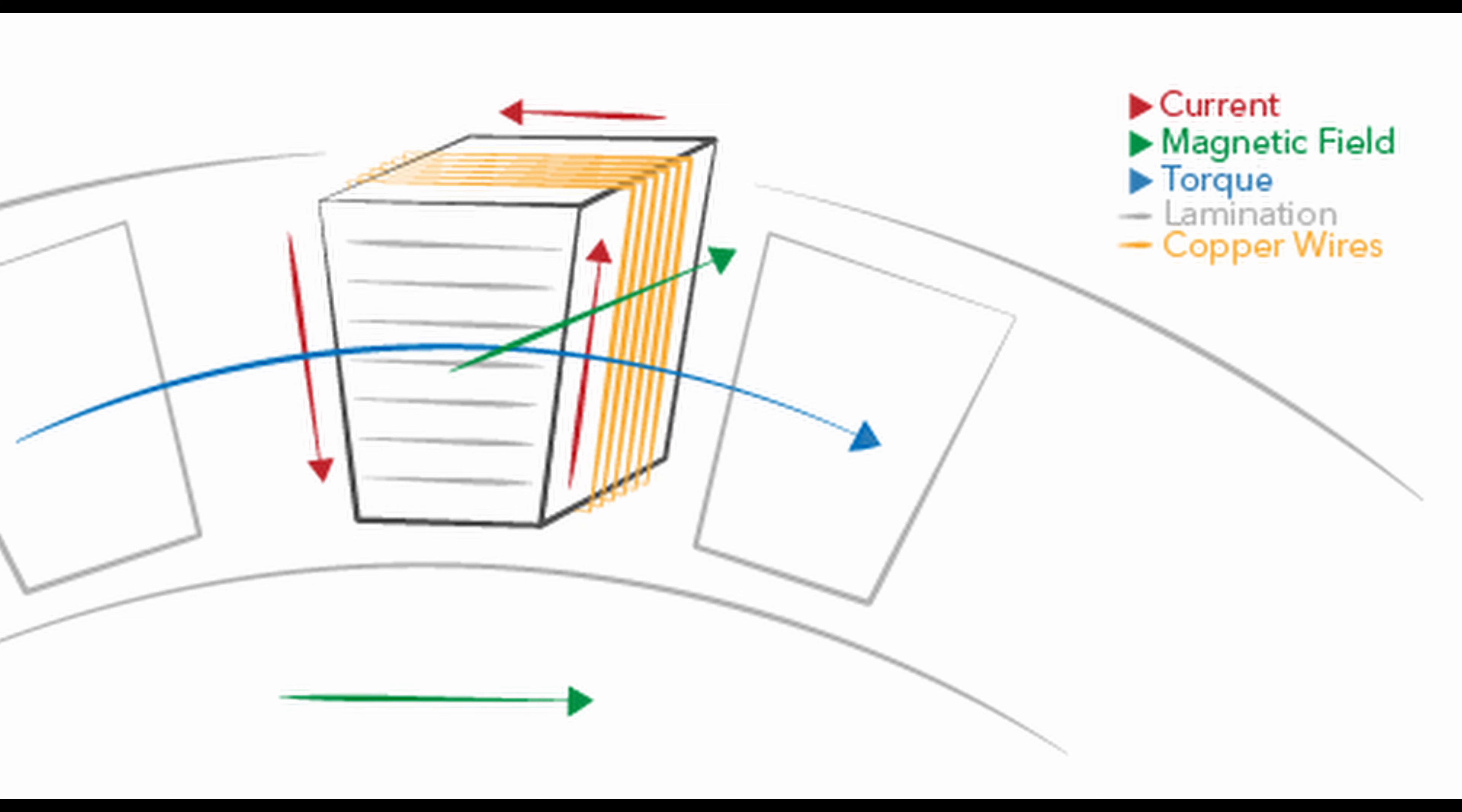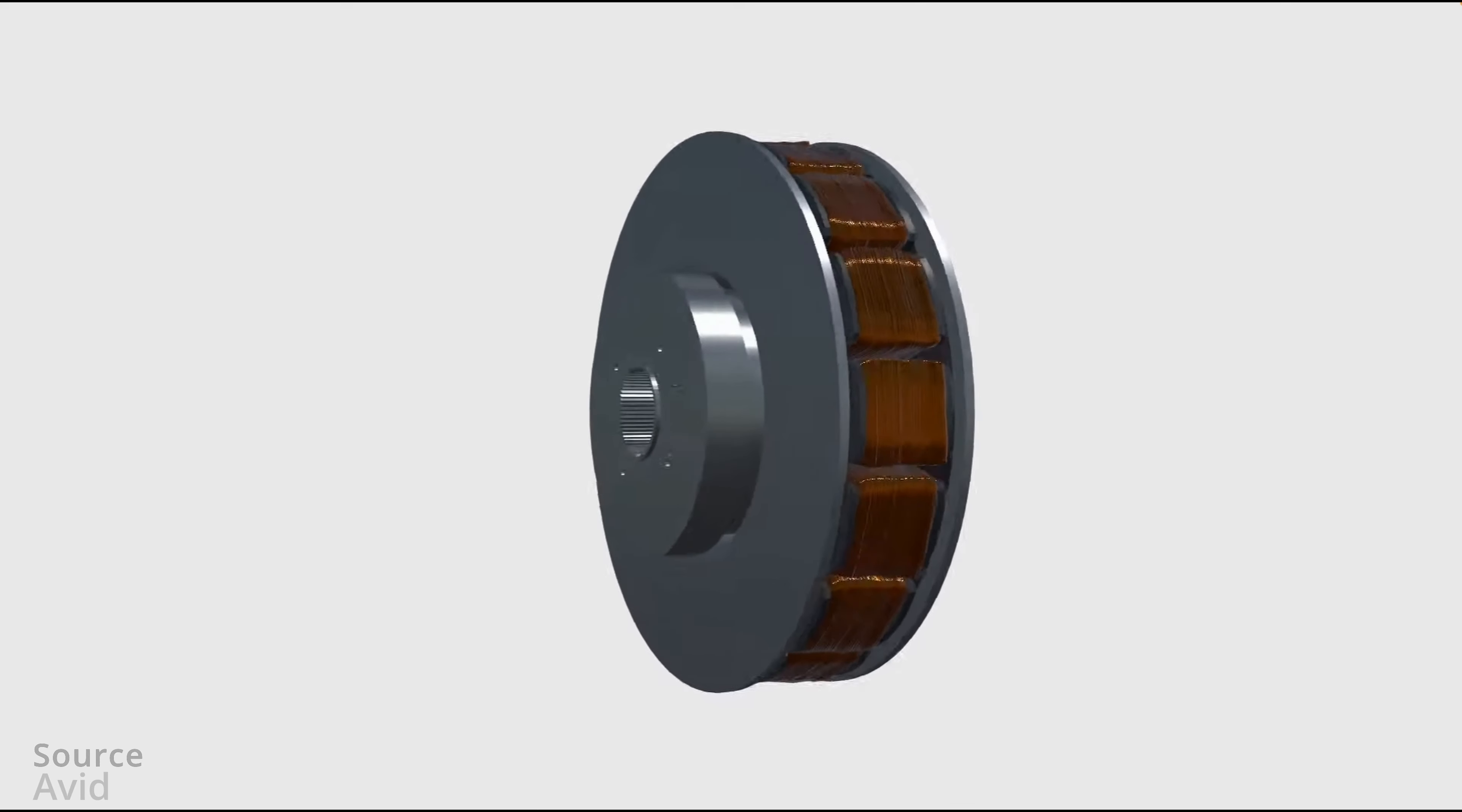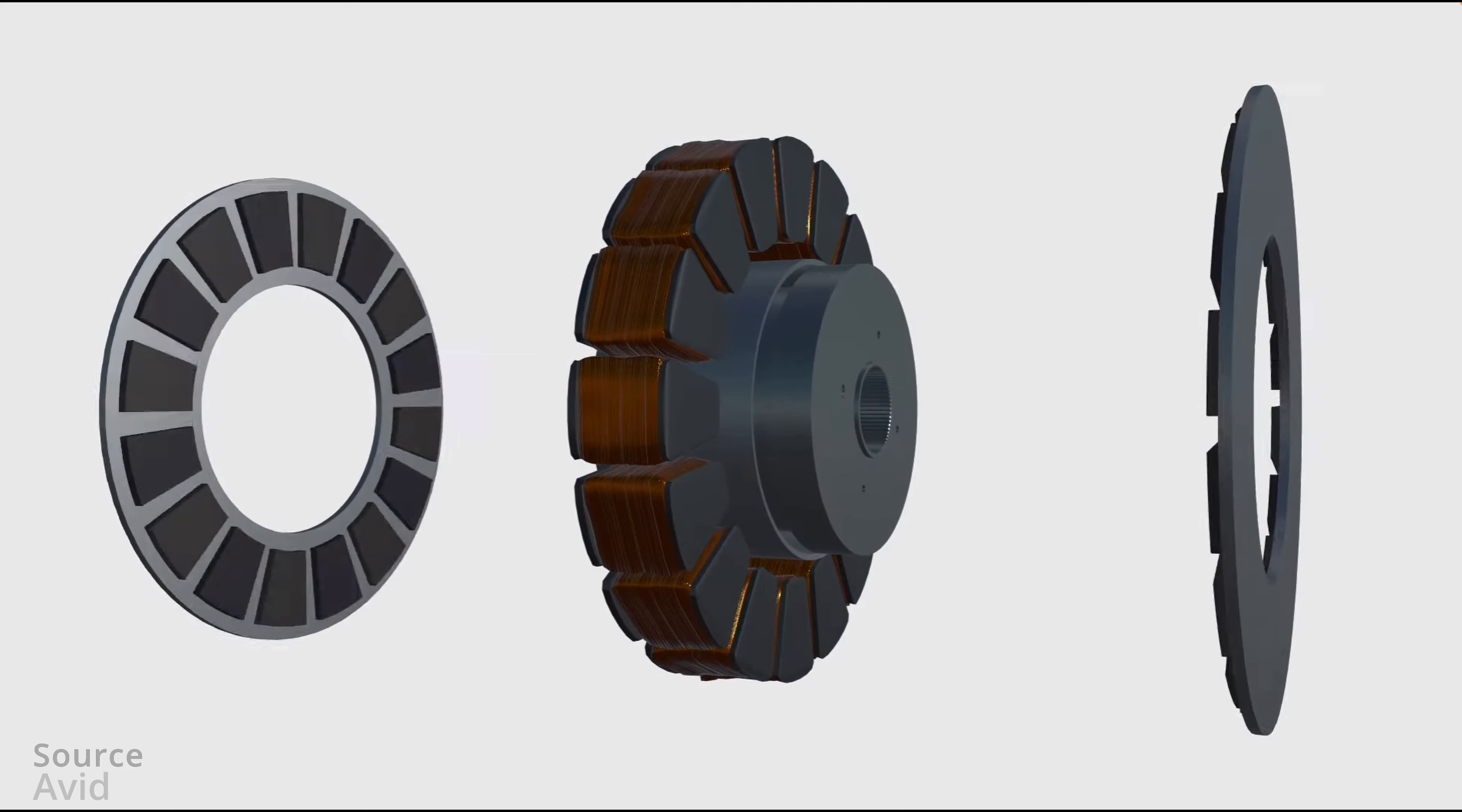The larger the surface area of the air gap of a certain dimension of a motor, the more torque it can produce. This means that for the axial flux machine the magnets and therefore the useful air gap reaches further from the central axis of rotation.